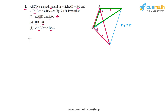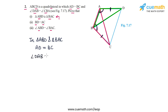Let's compare them and see which of their corresponding parts are equal. In triangle ABD and triangle BAC: AD is equal to BC — this is already given to us. Angle DAB is equal to angle CBA — both of these are given to us. And AB is common to both triangles, so AB is equal to AB.